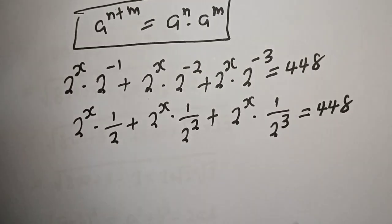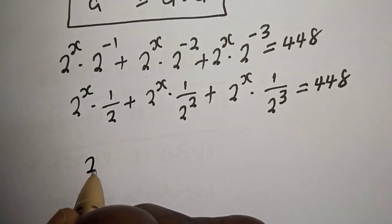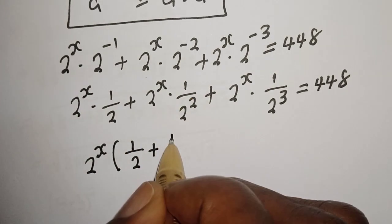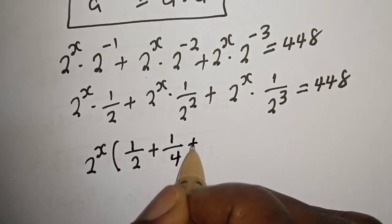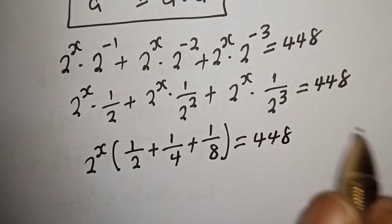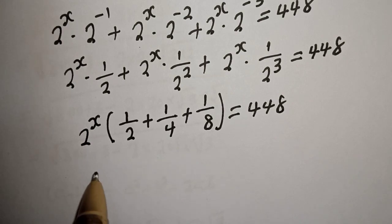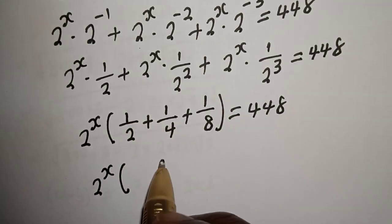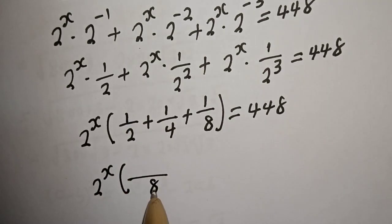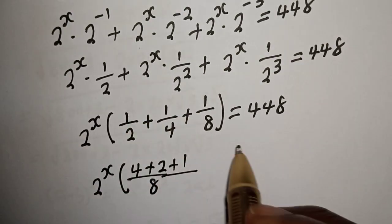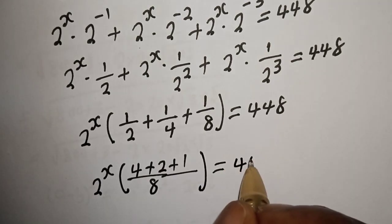2 raised to power s is common — let's bring it out. We have 2 raised to power s, bracket 1 over 2, plus 1 over 2 squared which is 1 over 4, plus 1 over 2 raised to power 3 which is 1 over 8, is equal to 448. Multiplying everything out we get 4 plus 2 plus 1 over 8, equal to 448.